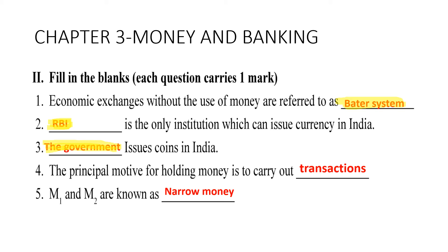Fourth: the principal motive for holding money is to carry out transactions. Fifth: M1 and M2 are known as narrow money.